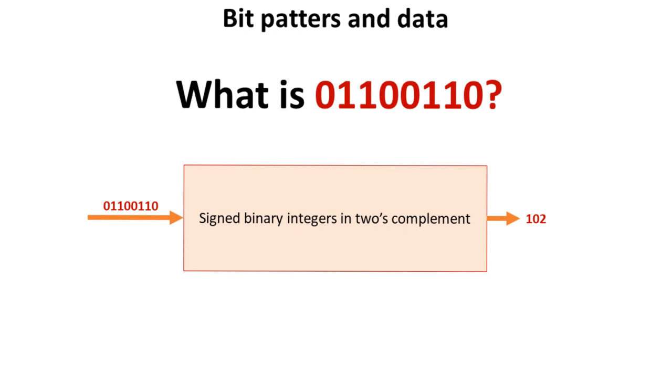But the exact same string of numbers, interpreted as a signed binary integer in 2's complement, is positive 102.